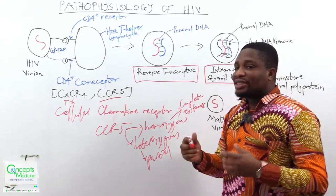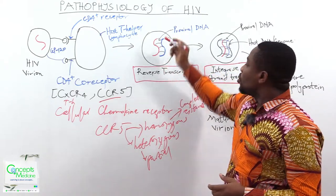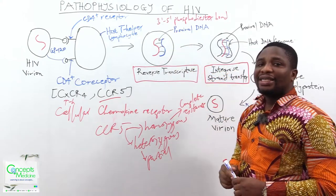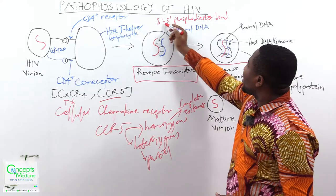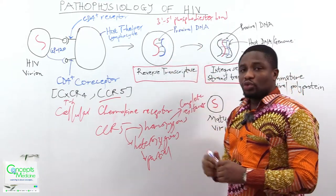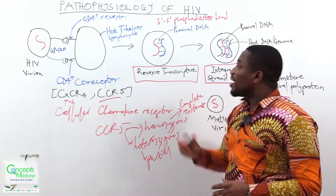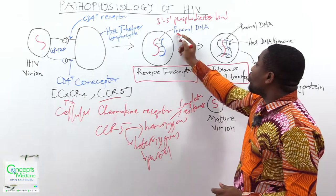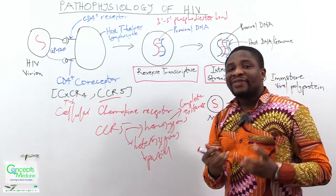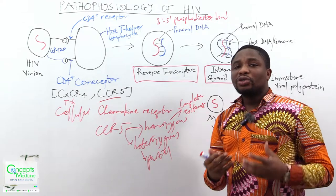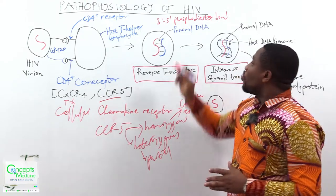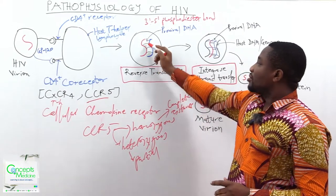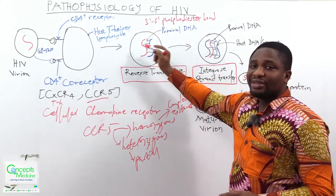Once the reverse transcriptase lays the complementary strand, it enhances the formation of a 3',5'-phosphodiester bond, leading to the production of a double-stranded DNA. That double-stranded DNA we call the proviral DNA, because it is coming from the virus and not from the host cell.